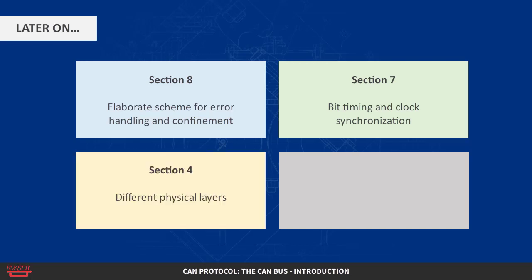CAN may be implemented using different physical layers — see Section 4 — some of which are described there, and there are a fair number of connector types in use, also in Section 4. We also provide a number of oscilloscope pictures, see Section 5, for those interested in the details of a message.